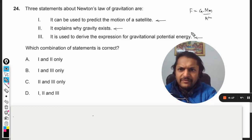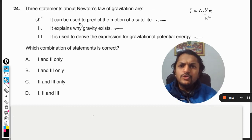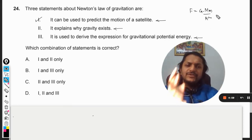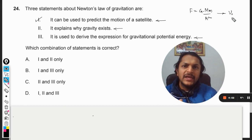This is Newton's law of gravitation and definitely number one is correct. It can be used to predict the motion of a satellite because with the help of this formula only you are going to find the velocity, the orbital velocity of the satellite and the trajectory also.